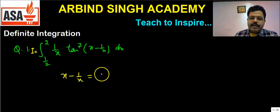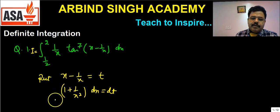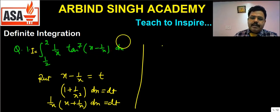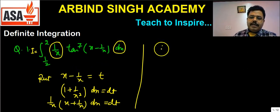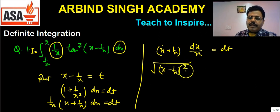The key expression is x − 1/x. We will use the substitution: let t = x − 1/x. Then differentiating, (1 + 1/x²)dx = dt, which gives (x² + 1)/x² · dx = dt, and dx/x equals dt over (x − 1/x)² + 2, so dx/x = dt.